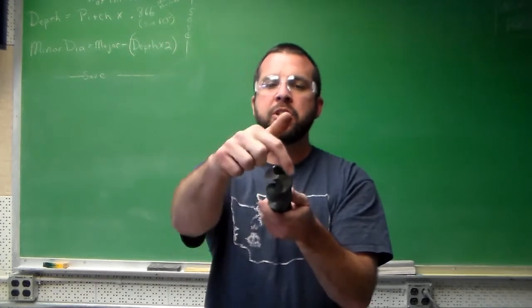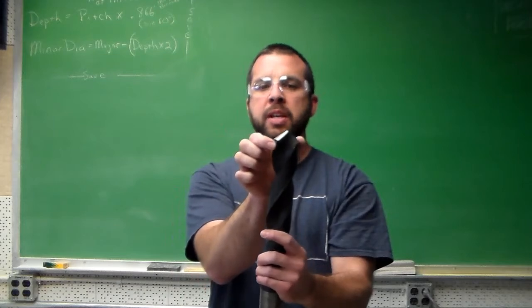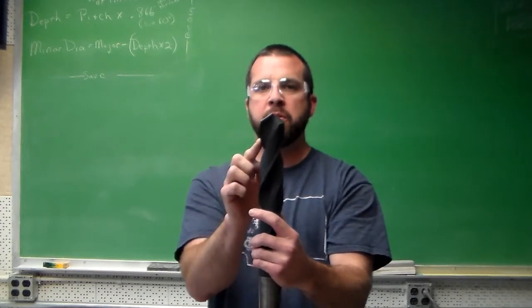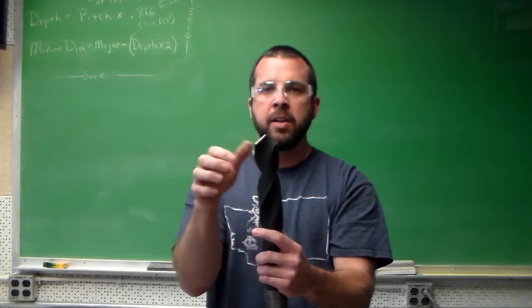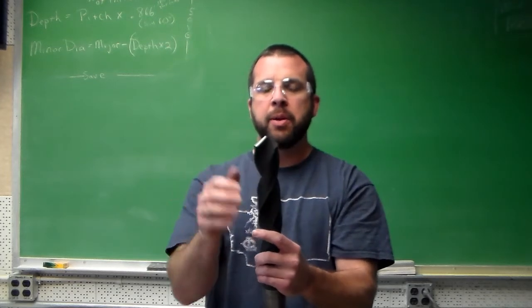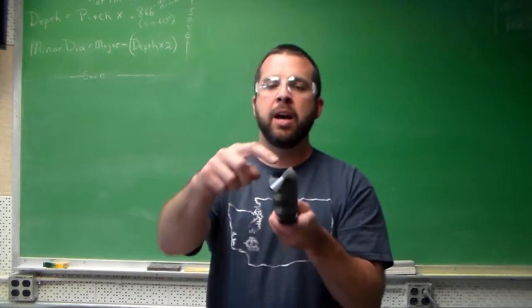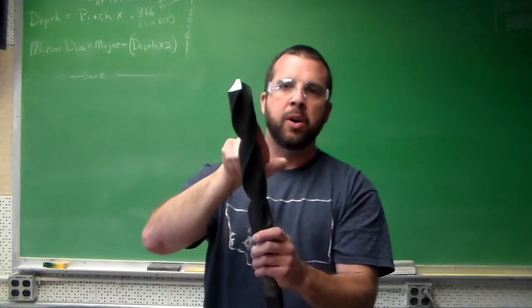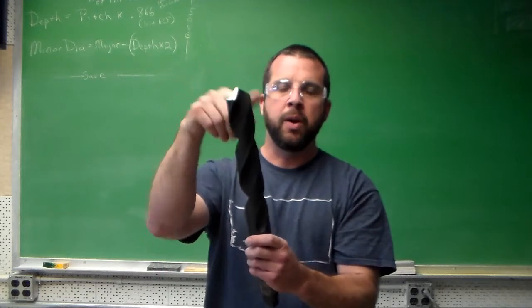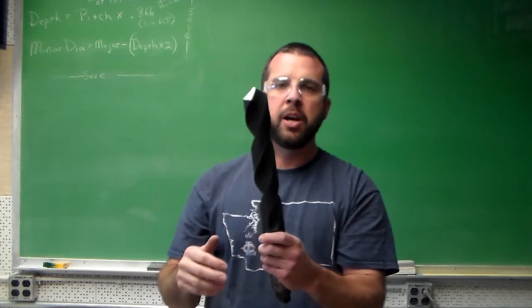Now on each side we have our cutting edges. On the outside of the diameter we have the margin of the drill, or sometimes people will refer to these as the lands, but that's more associated with end mills. And then we have our flutes that run down the length of the drill, and that's where our chips go as the material is being removed during the cutting operations.